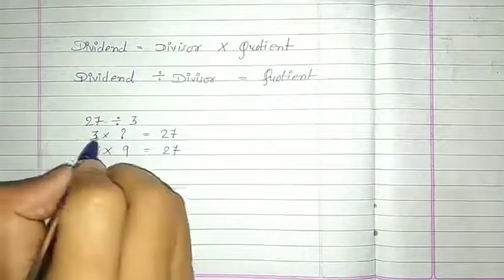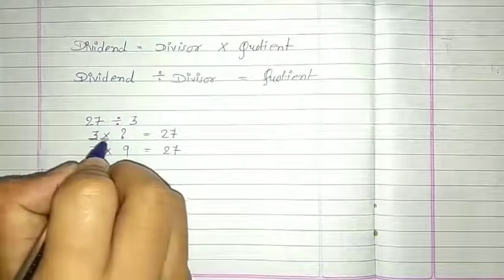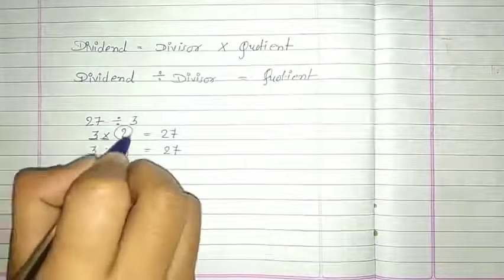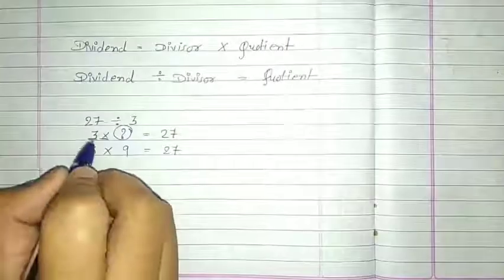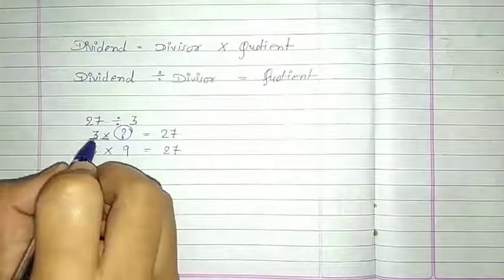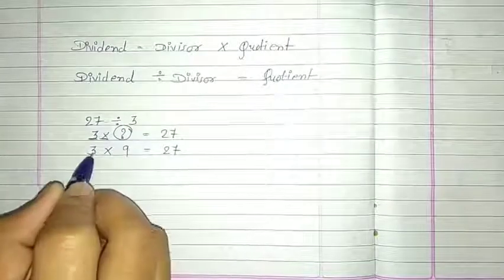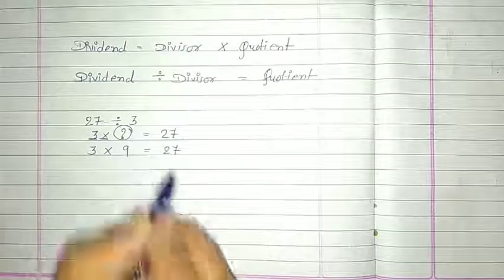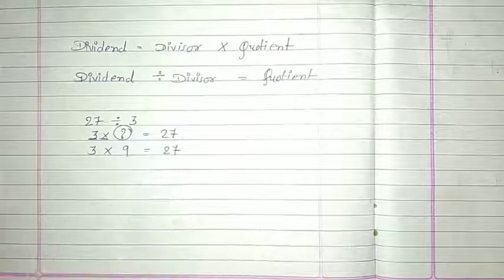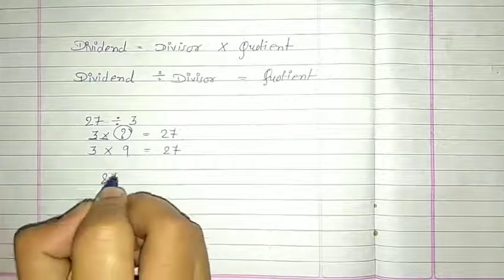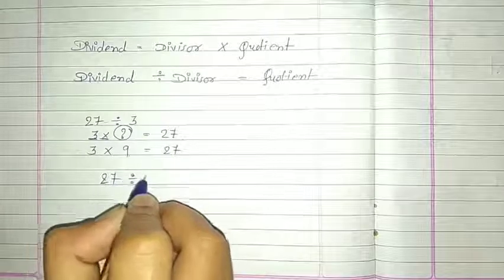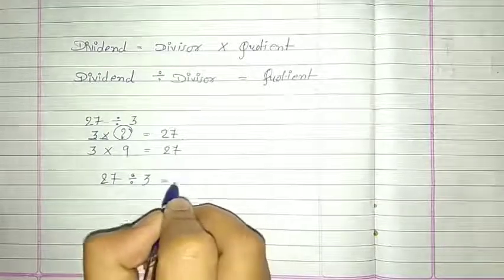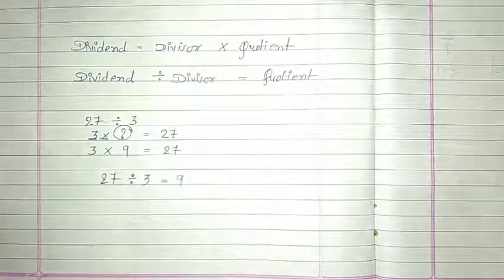3 के table में 27 का पता है, वो हमें find करना है. 3 multiply by question mark is equal to 27. तो अगर हम 3 का table बोलेंगे तो हमें पता चल जाएगा. 3 nines are 27, so our answer is 9. 27 divided by 3 is equal to 9.